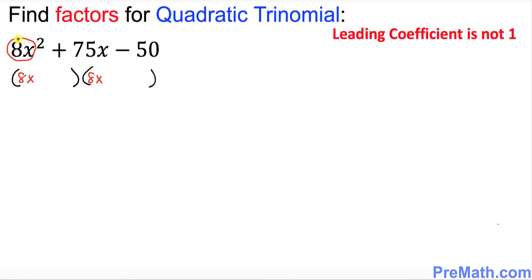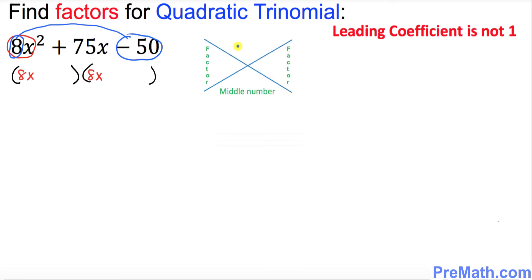Now look at this end, this number 8, and on the other end this number is negative 50. Multiply these two numbers, 8 and negative 50. If you multiply them that's going to be negative 400. So negative 400 is going to be right on the top in this diagram. Look at the middle number, positive 75. Put down positive 75.